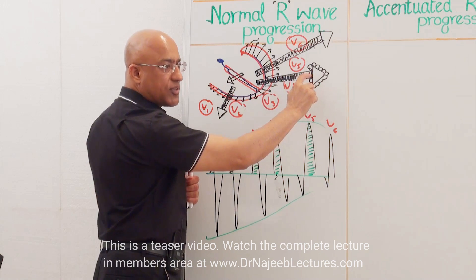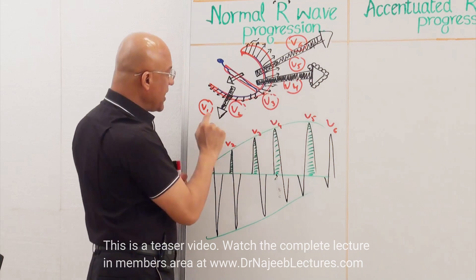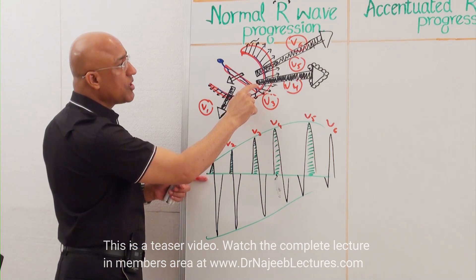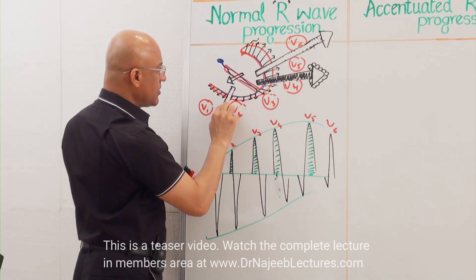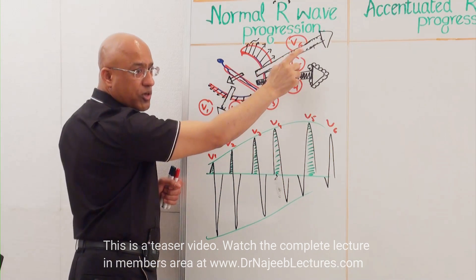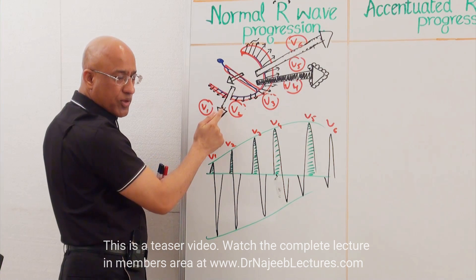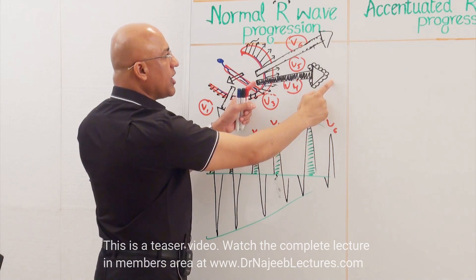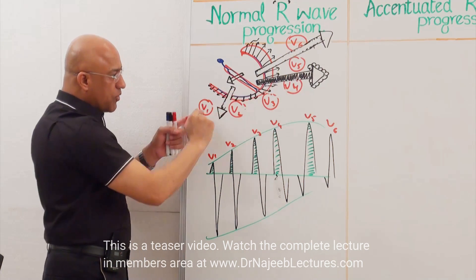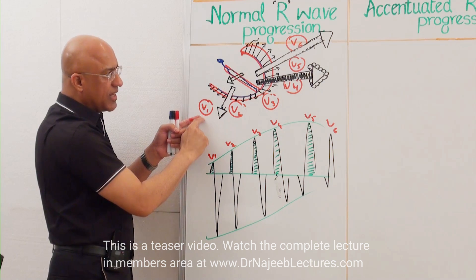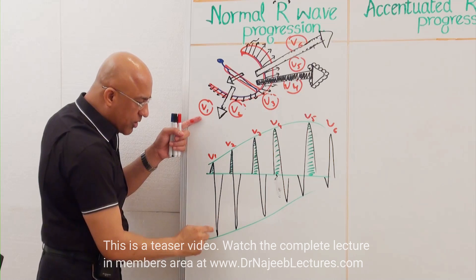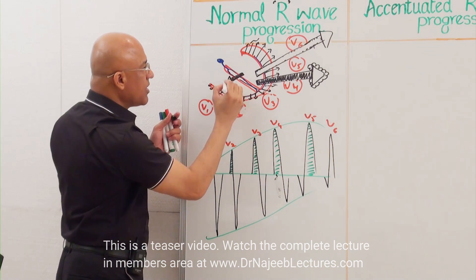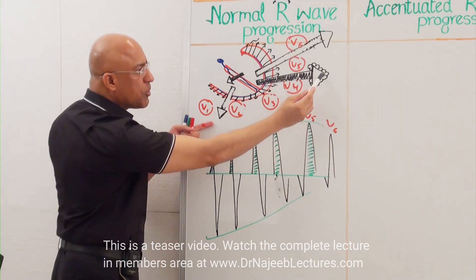This resultant vector represents the resultant electrical forces sensed by electrodes V1 to V6. Now you can see why V1 is mainly negative — because major ventricular depolarization is moving away from it. The septal vector was coming towards V1, which produces a little R-wave. But major ventricular depolarization is going away, producing a deep S-wave. This is the resultant vector, and component vectors are the right ventricular and left ventricular depolarization vectors.